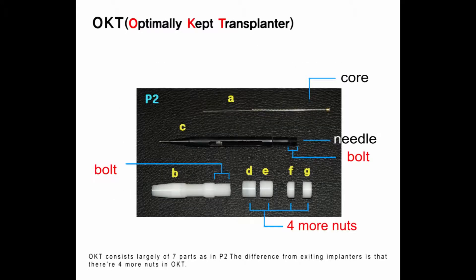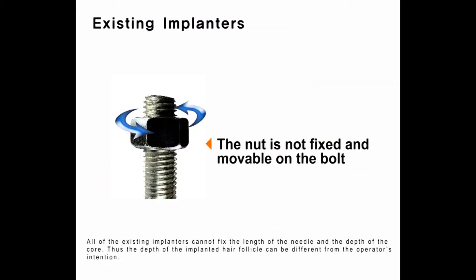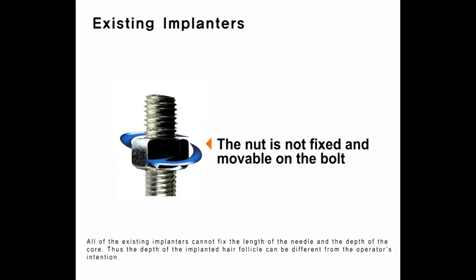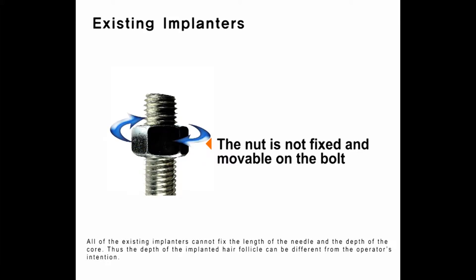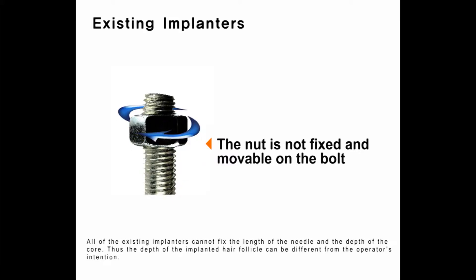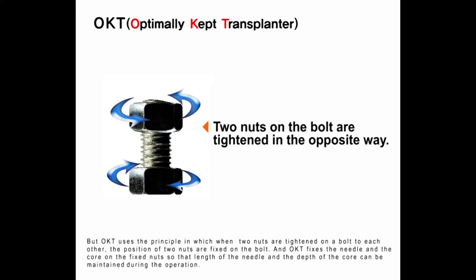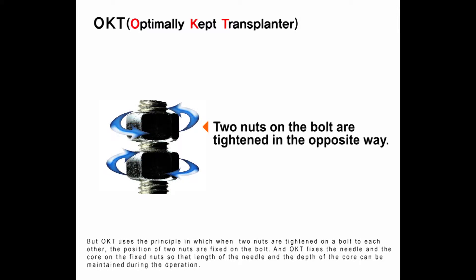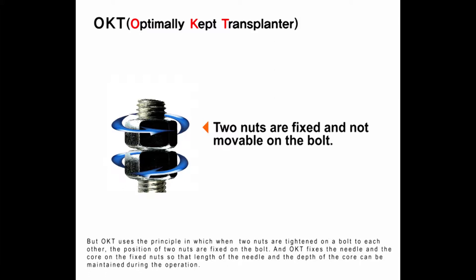OKT consists largely of seven parts. The difference from existing implanters is that there are four more nuts in OKT. All existing implanters cannot fix the length of the needle and the depth of the core, so the depth of the implanted hair follicle can differ from the operator's intention. OKT uses the principle in which when two nuts are tightened on a bolt against each other, their positions are fixed, and OKT fixes the needle and core on those nuts so that the needle length and core depth can be maintained during the operation.